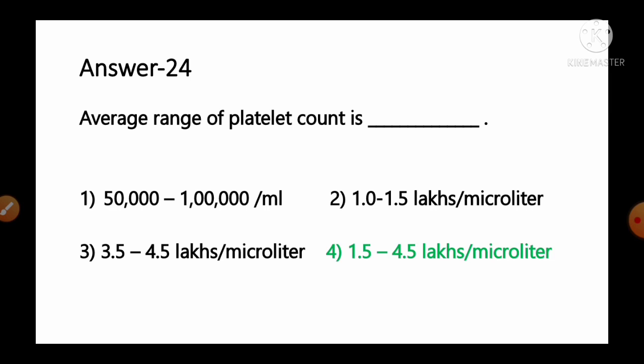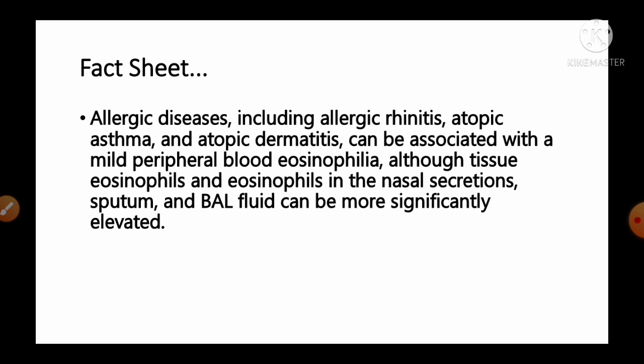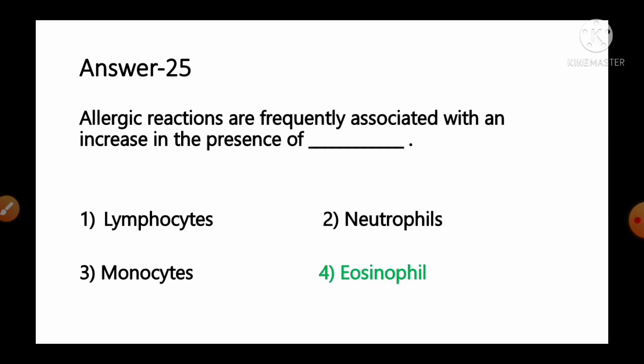Question number 25: Allergic reactions are frequently associated with an increase in the presence of — options: 1) lymphocytes, 2) neutrophils, 3) monocytes, 4) eosinophils. Allergic diseases including allergic rhinitis, atopic asthma and atopic dermatitis can be associated with mild peripheral blood eosinophilia. Tissue eosinophils and eosinophils in nasal secretions and sputum can be more significantly elevated. So option number 4, eosinophils, is the correct answer.